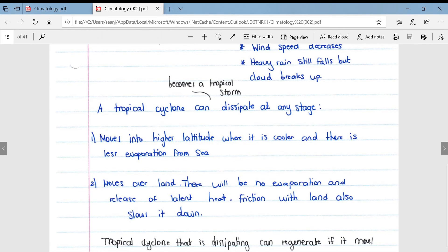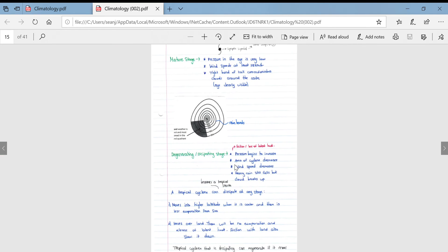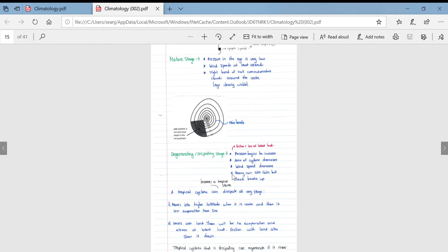A tropical cyclone that is dissipating can regenerate if it moves over the land, so if half of it moves over the land. Everyone thinks okay, it's moving over the land so it's going to start to dissipate. However, if it sits in that spot where half of it is over the land and half of it is over the ocean, it can still receive enough energy just from that half that is lying over the ocean.